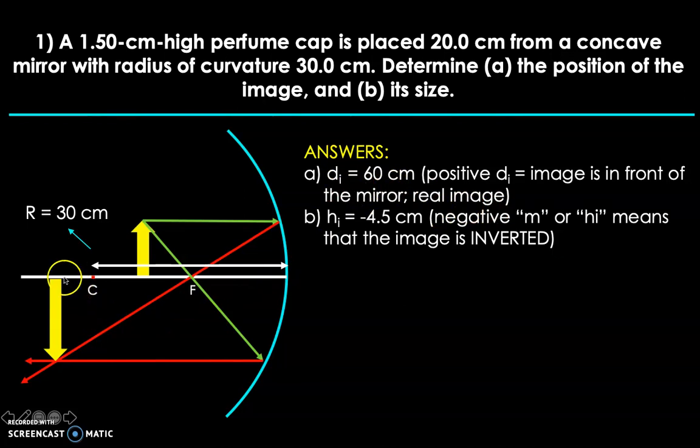Apart from that, it's bigger than the object. The image is bigger than the object. And it's seen here because the image height is 4.5 centimeters, while the object height is only 1.5 centimeters. So the ray diagram is consistent with our answers. Because in fact, the mirror equation and the magnification equations are all derived from the ray diagram. So these answers make sense. They have to agree.